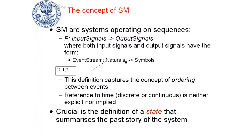State machines are systems. As systems, they are operating on a set of input signals and producing a set of output signals. The state machines we are considering right now will operate on signals that are defined over a set of events or set of values defined over the domain of the natural numbers. So what is important is not the time at which a given value is produced, but the order of the signals. All our input and output signals will be defined over the naturals and consist of a set of symbols.